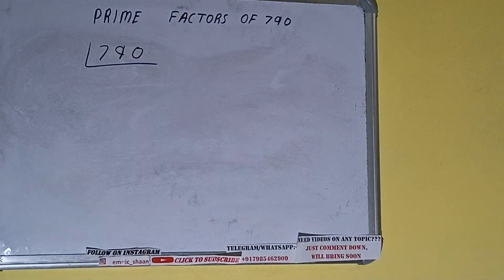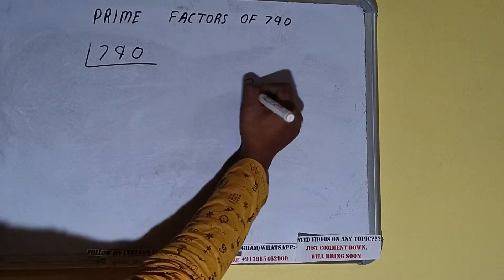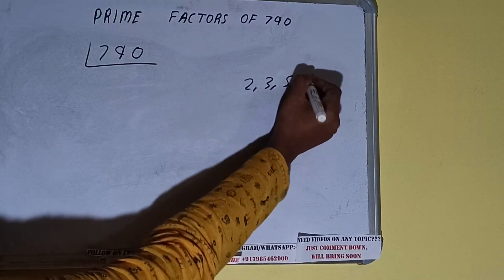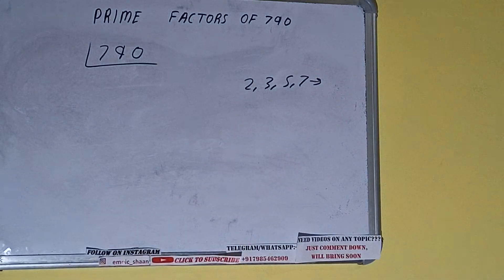The next thing we need to know about is what are prime numbers. Prime numbers are numbers that are divisible by 1 and the number itself, like 2, 3, 5, 7, and so on.